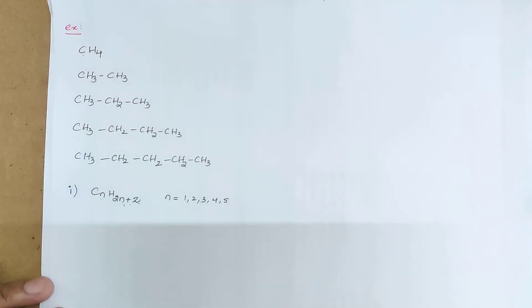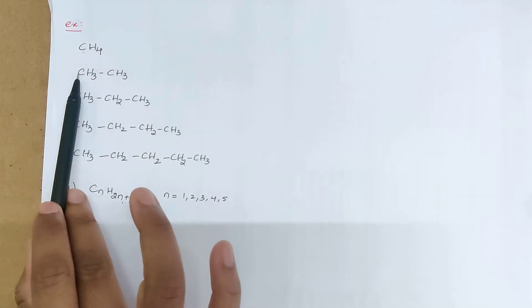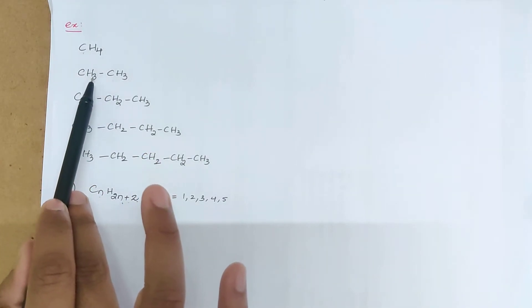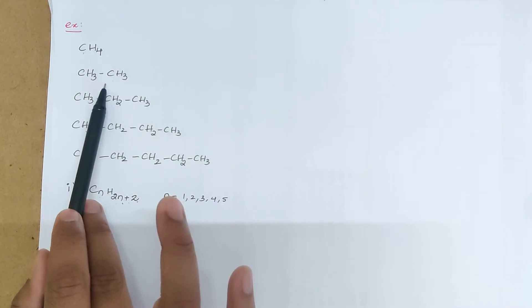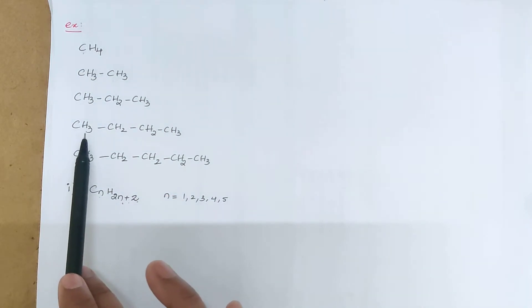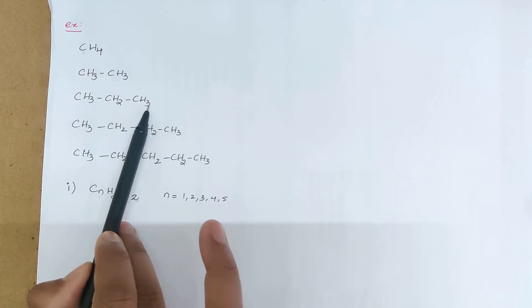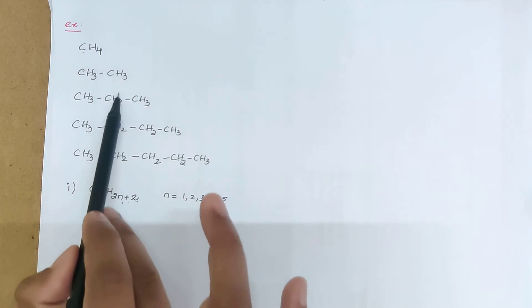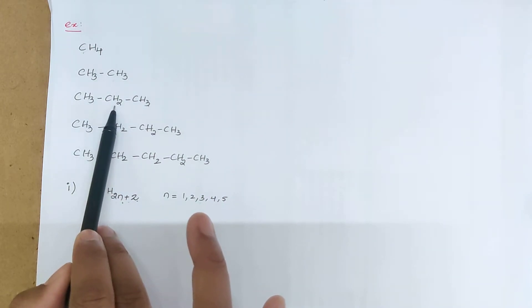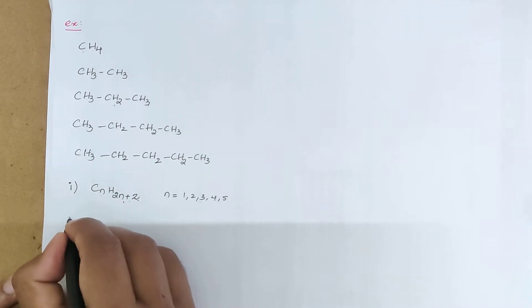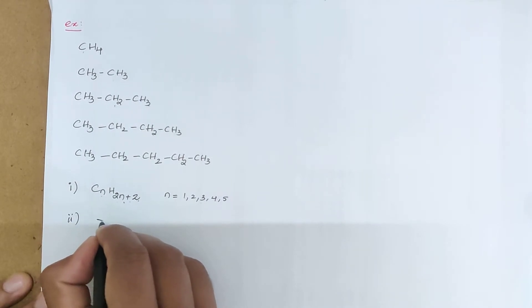If n is equal to 1, then we get CH4. If n is equal to 2, then we get C2H6. What is the difference between CH4 and C2H6? That is CH2 — the difference is one CH2 unit. If n is equal to 3, then we get C3H8, since 2×3 plus 2 equals 8. What is the difference between these two successive members C2H6 and C3H8? The difference is also CH2. So these members are separated by the CH2 unit.